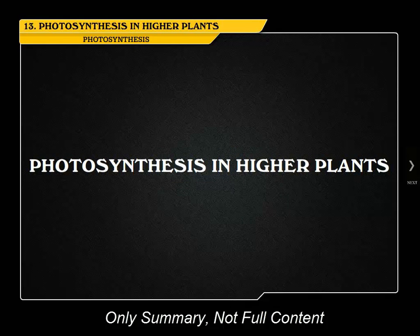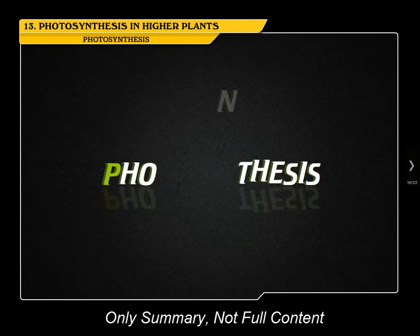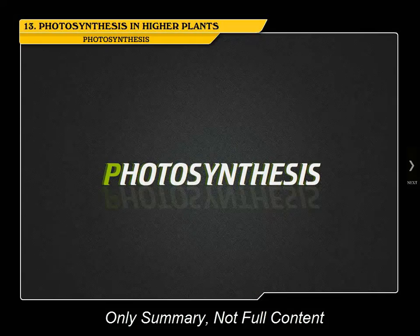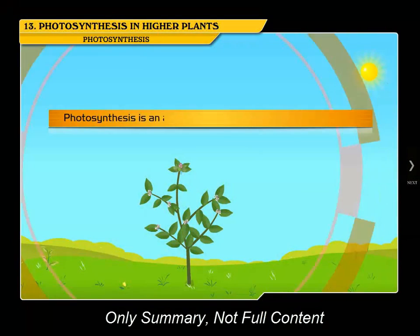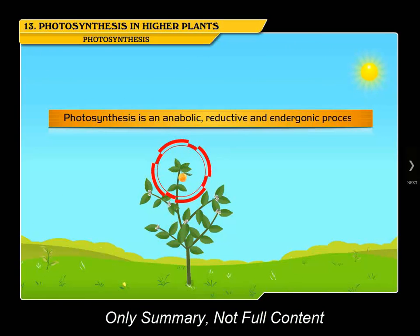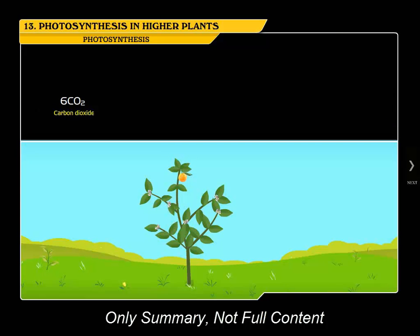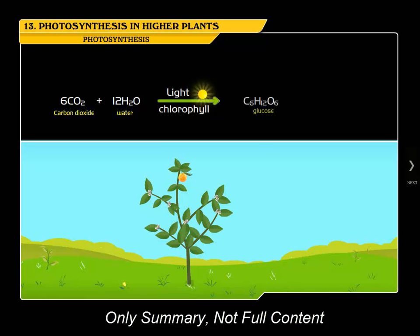Photosynthesis in higher plants. Photosynthesis is an anabolic, reductive, and endergonic process using light energy to reduce carbon dioxide into carbohydrates. Carbon dioxide plus water, in the presence of sunlight and the pigment chlorophyll, gives glucose plus water and oxygen.